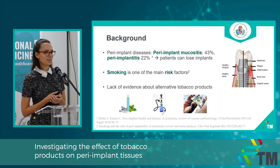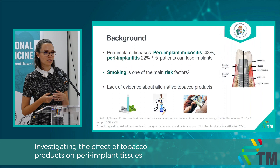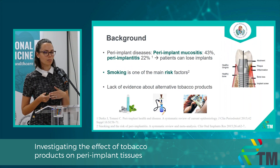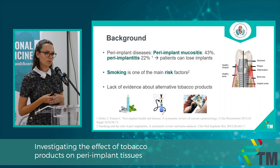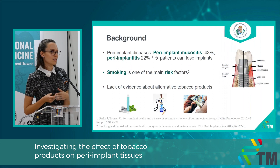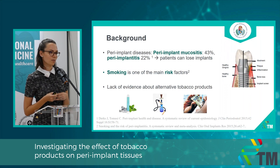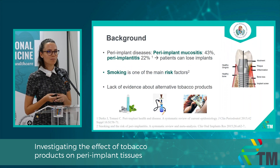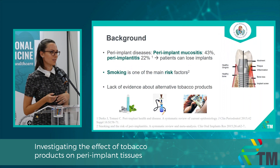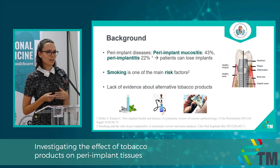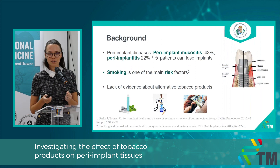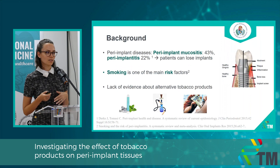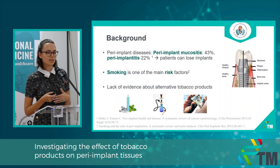Peri-implant diseases are defined as inflammatory conditions of the surrounding peri-implant tissues. Peri-implant mucositis involves only the mucosa, while peri-implantitis involves both the mucosa and the underlying bone structure. If these are not treated properly, patients can lose implants. We know that smoking is one of the main risk factors of peri-implant diseases and its role has been numerously investigated.